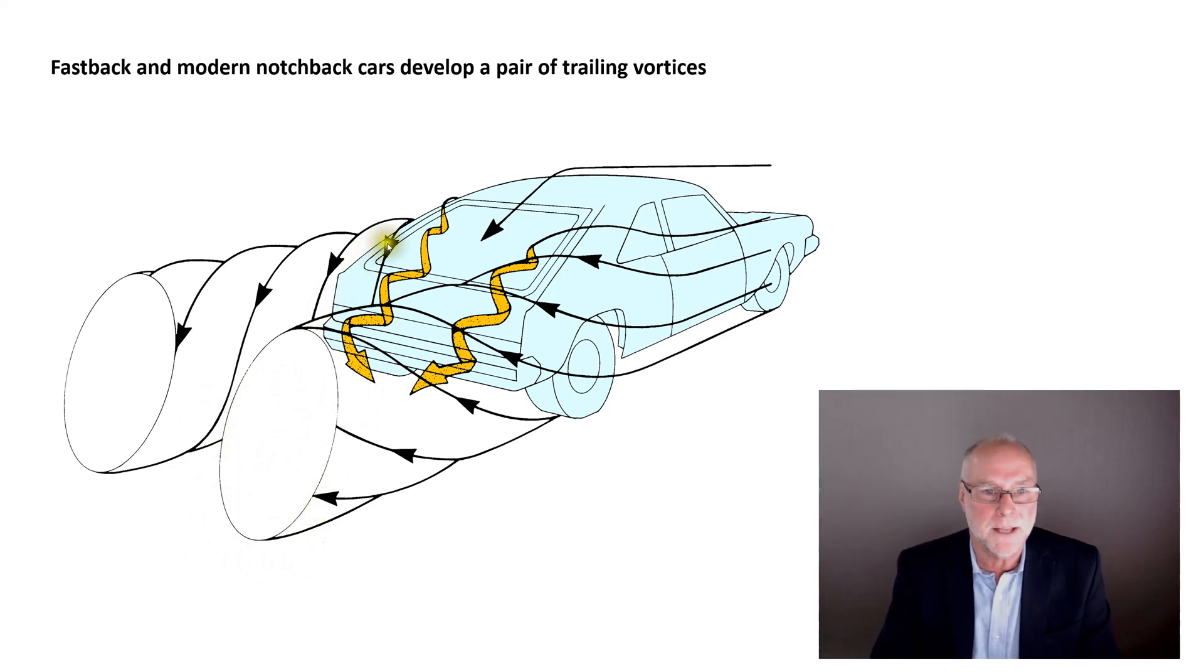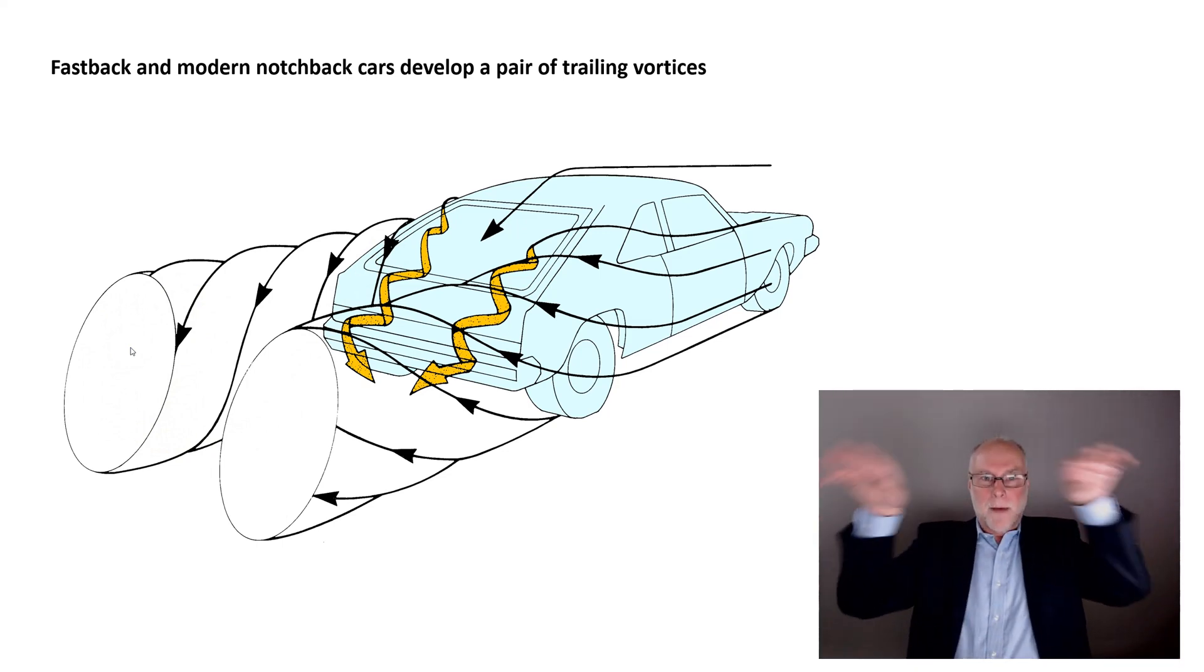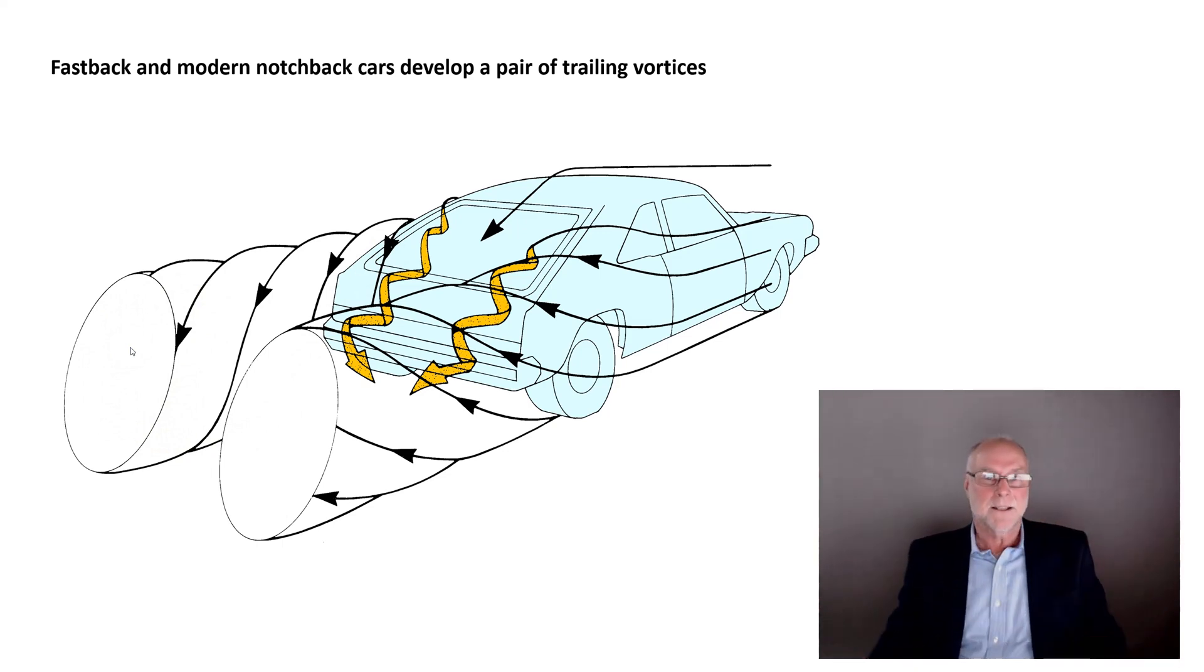Conversely, if we follow the air on the other side of the car, the left-hand side when viewed from the rear, it's flowing the other way. It's flowing clockwise. So we have these vortices coming off the back of the car like that.